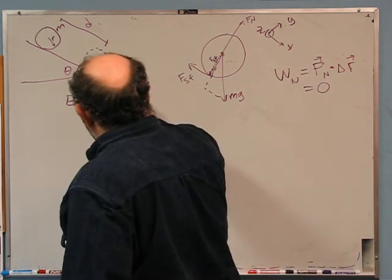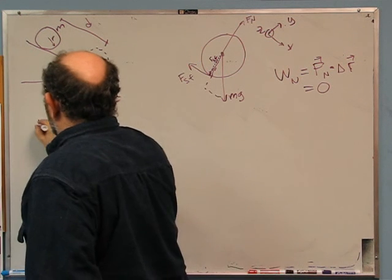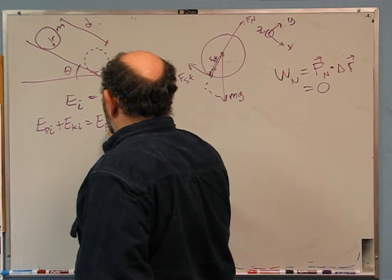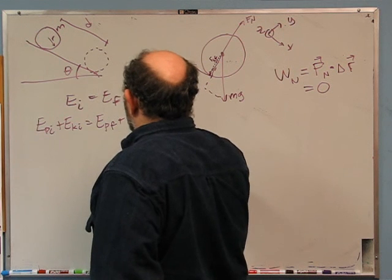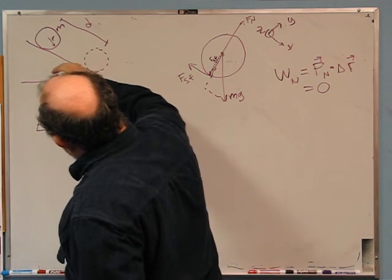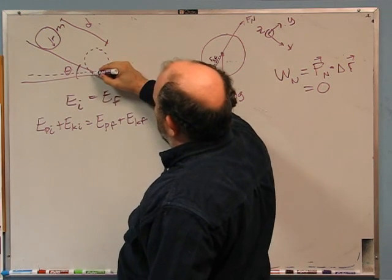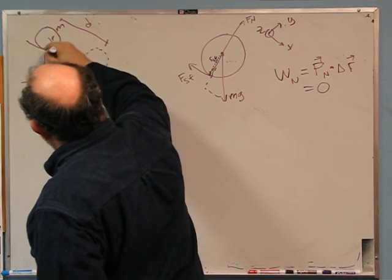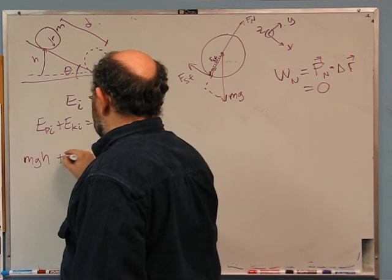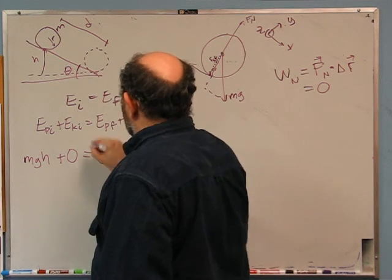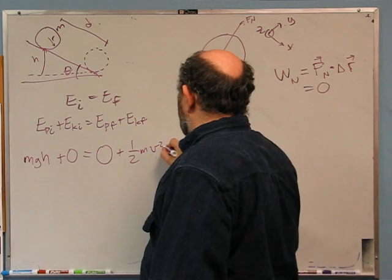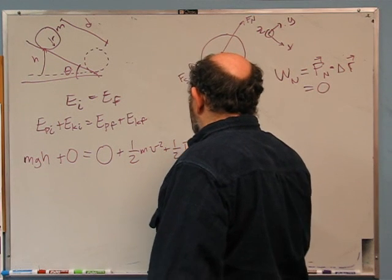Given that we have conservation of energy, the initial potential energy plus initial kinetic energy equals the final potential energy plus final kinetic energy. Initial kinetic energy is zero. The final potential energy is zero because we chose that as our zero, plus we have one-half mv squared plus one-half I omega squared.